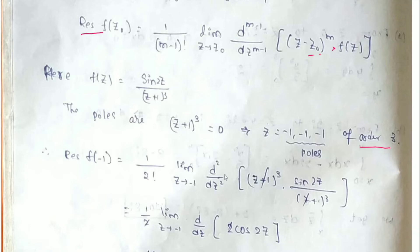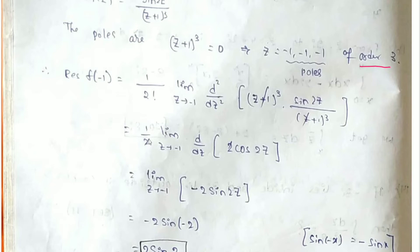We need d²/dz² of sin(2z). Taking the first derivative of sin(2z) gives 2cos(2z). The 2s cancel in the formula, so we then take the limit as z tends to minus 1 of d/dz of cos(2z), which gives minus 2 sin(2z).